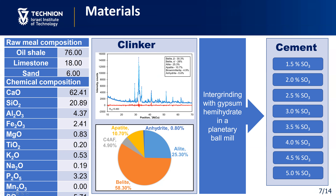The results of this analysis are shown here. The main phase in the mineral composition of this clinker was belite, about 16%, and the next one is alite, about 25%. After analyzing, this clinker was integrated with gypsum hydrate, the amount of which was calculated according to the amounts of sulfate needed, varying from 1.5% to 5% sulfate by mass of cement. This yielded 8 cements with different sulfate contents.